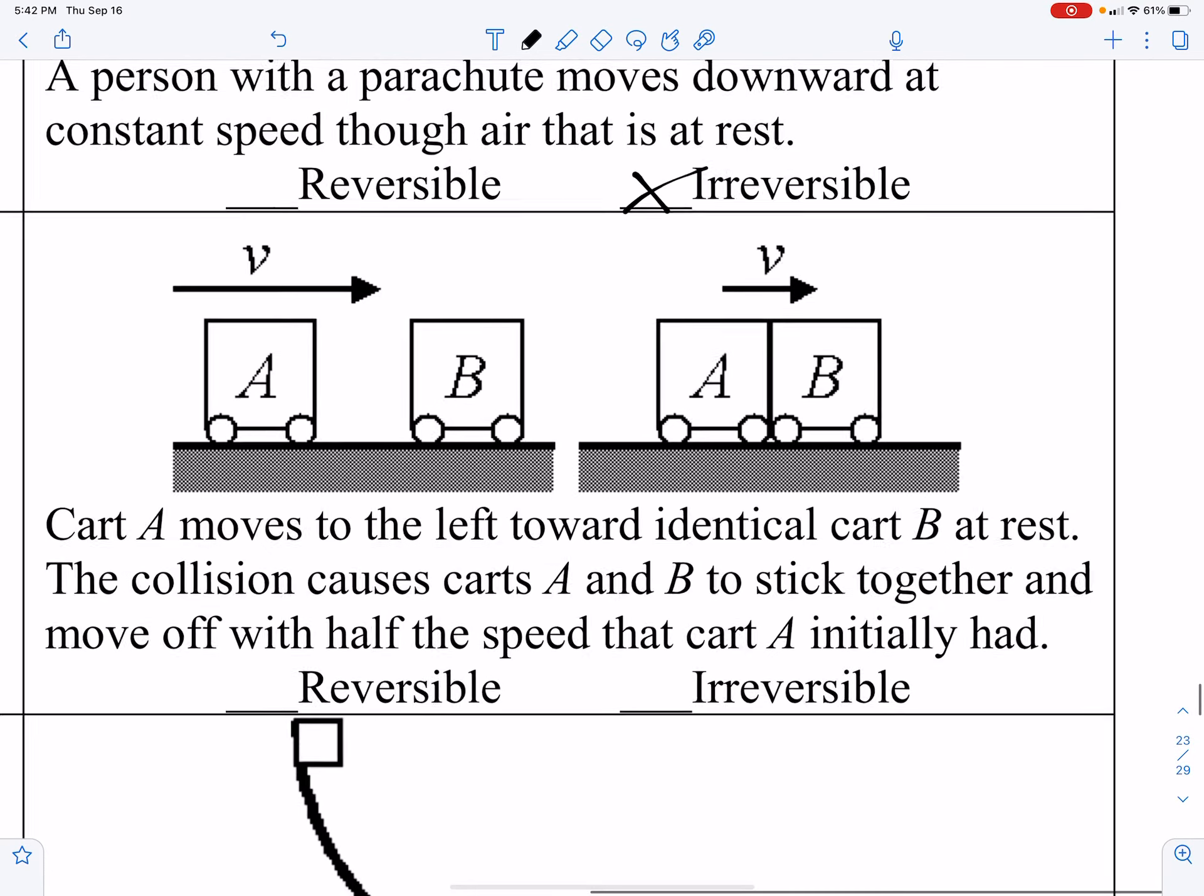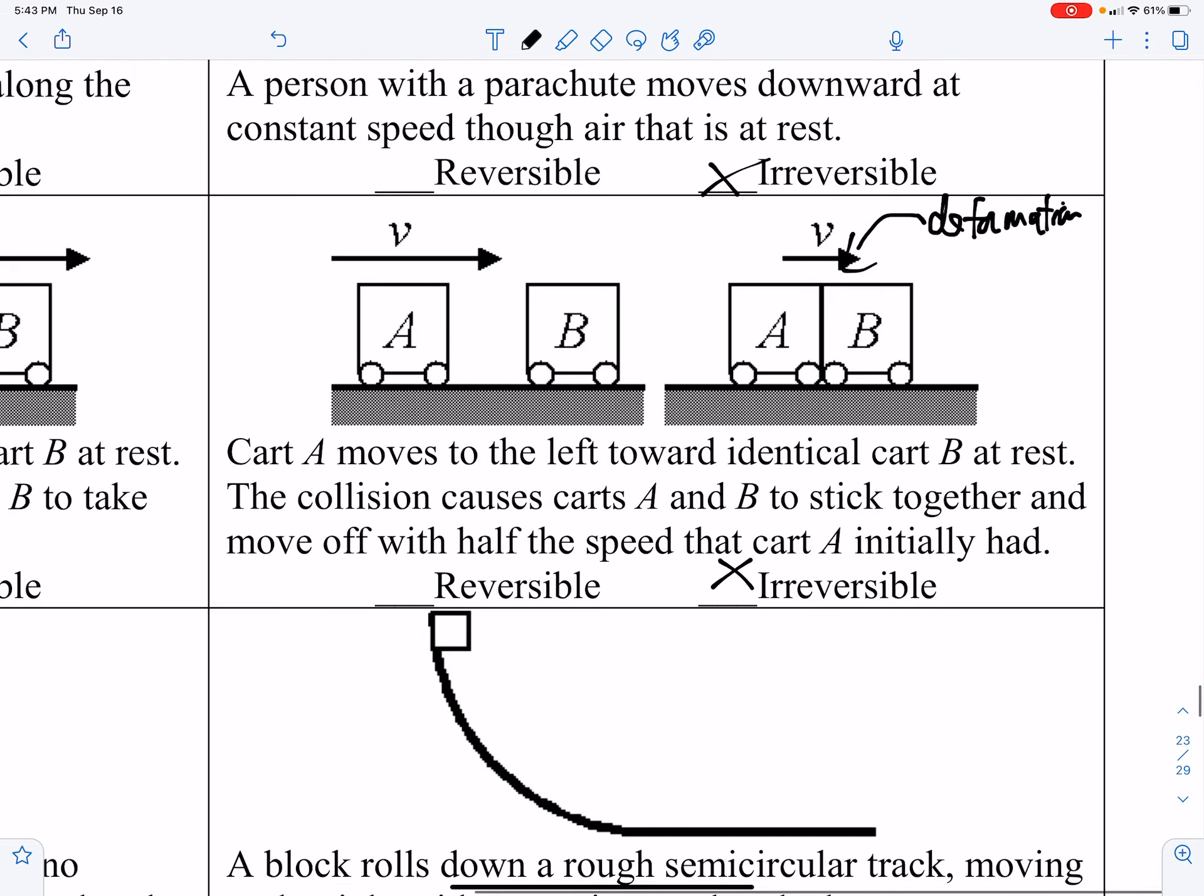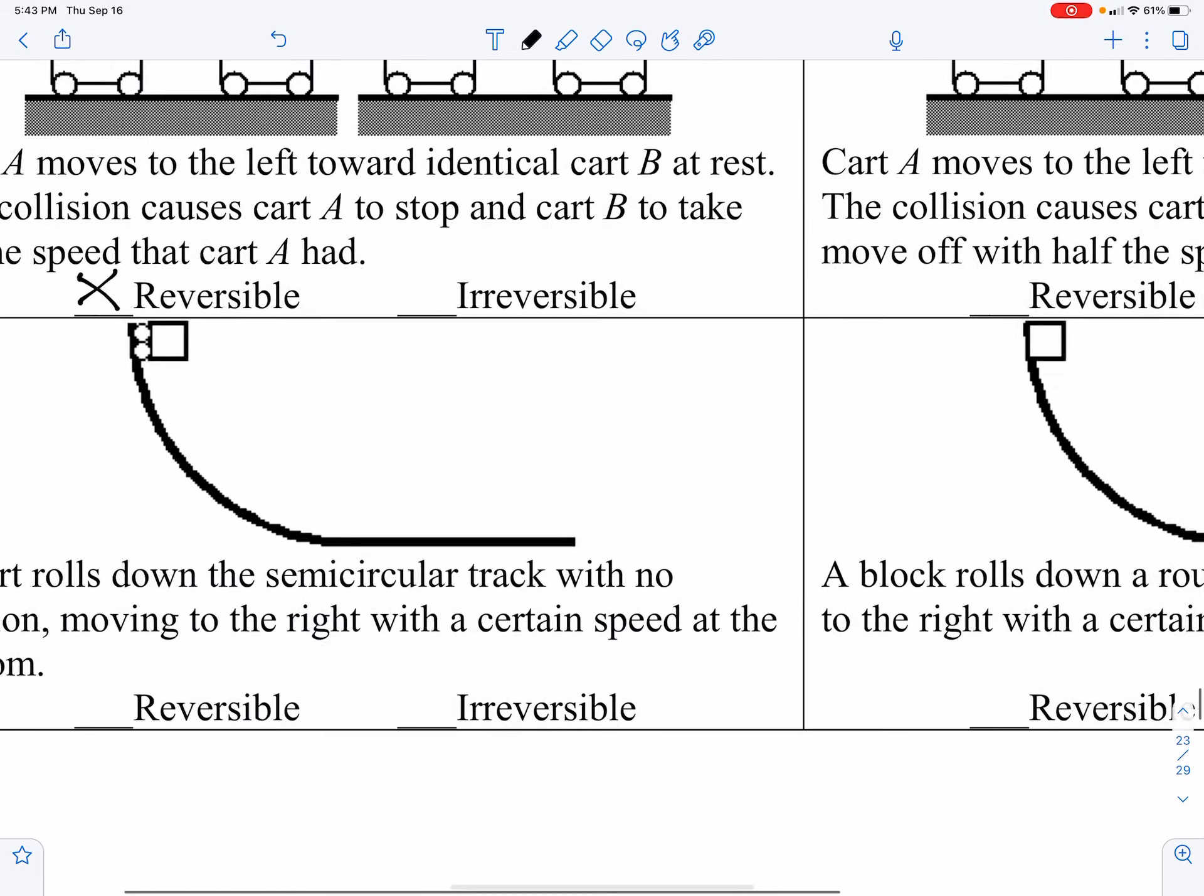However, if cart A strikes B and they stick together and move as one, that is an irreversible process. Partly because there is some deformation that occurs as the two objects stick together. When friction is involved or deformation occurs, that's a telltale sign of an irreversible process.